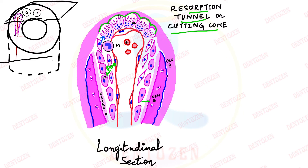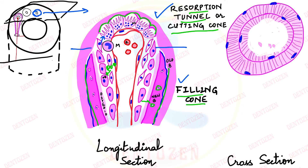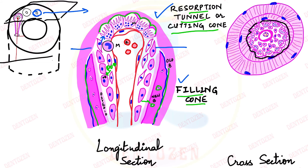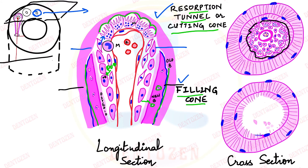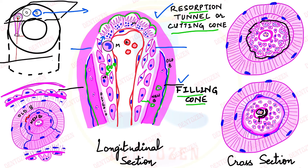Osteoblasts lay down new bone over the resorbed surface, first forming a cement line over which new bone is deposited, while osteoid (unmineralized matrix) remains. Osteoblasts embedded in forming bone become osteocytes. The area of active bone formation is called the filling cone. In cross section, the cutting cone shows osteoclasts at the center, while the filling cone is filled entirely by osteoblasts forming new bone. When formation is complete, a reversal line separates old and new bone, and the unresorbed part of the old osteon remains as interstitial lamellae.